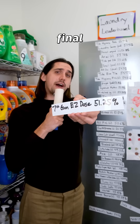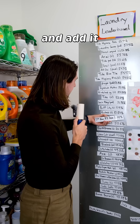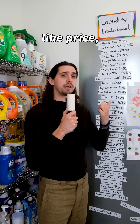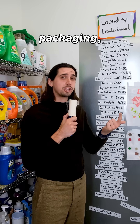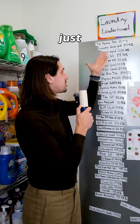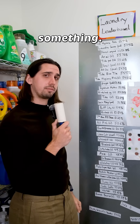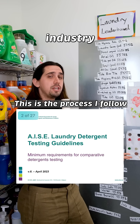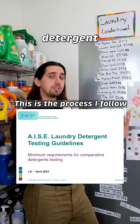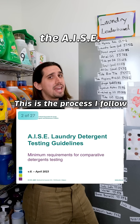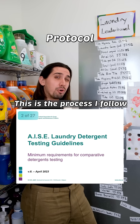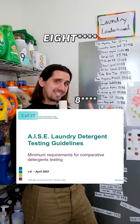Then I write down the final number and add it to the board. I also take other things into consideration like price, packaging, and sustainability, besides just performance, when I review something. This is the industry standard when it comes to testing laundry detergent performance — it's the AISE laundry detergent test protocol version 7.